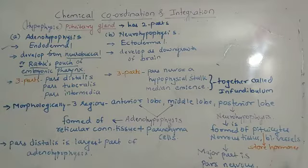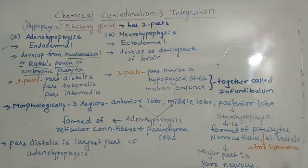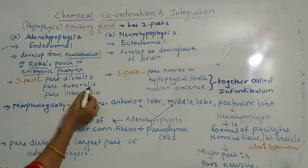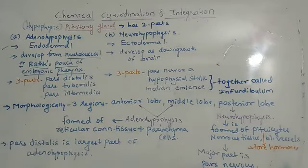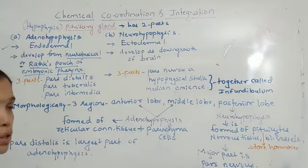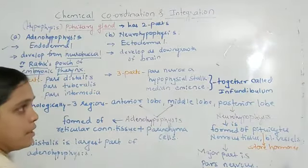During embryonic development, the adenohypophysis gives rise to two parts: the pars tuberalis, pars intermedia, and pars distalis. The neurohypophysis forms the pars nervosa, hypophysis stalk, and median eminence.